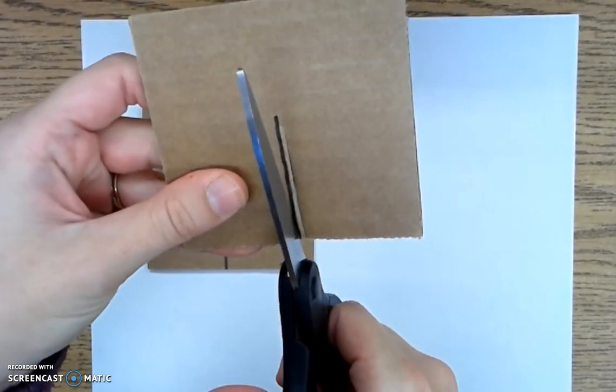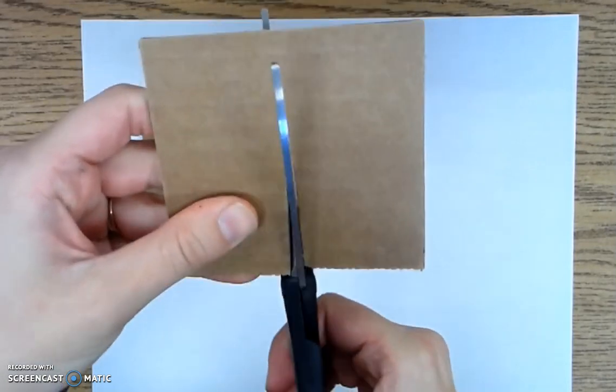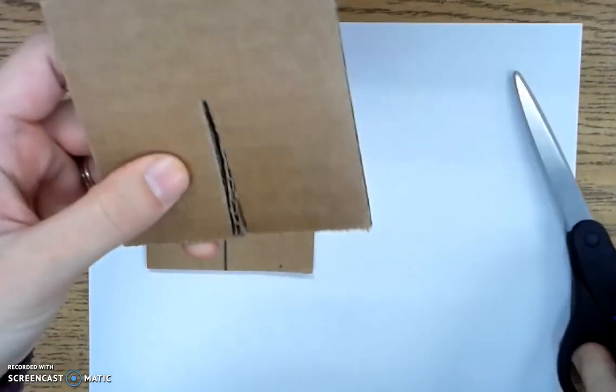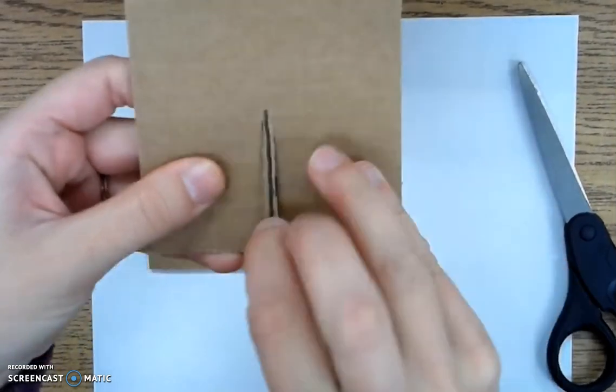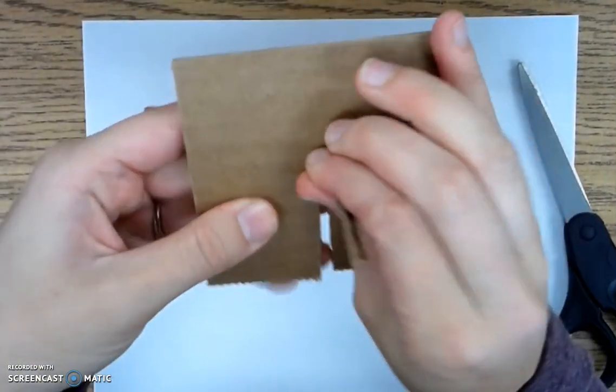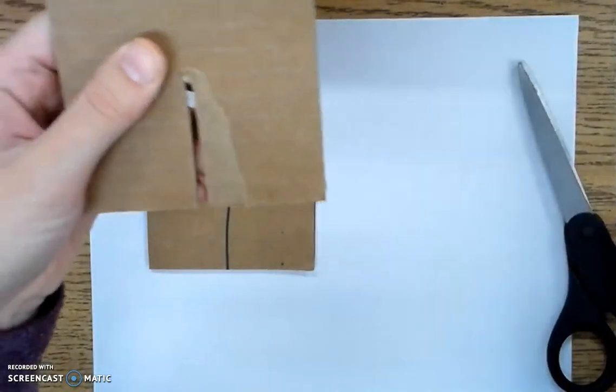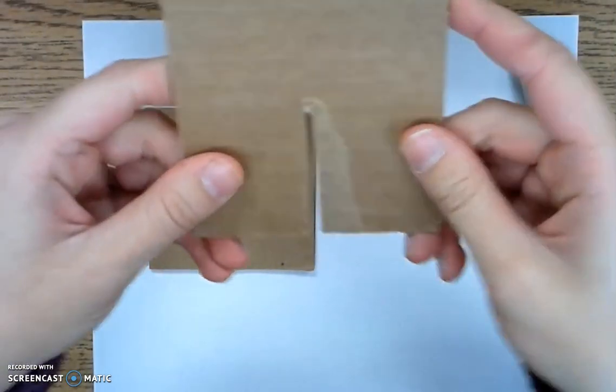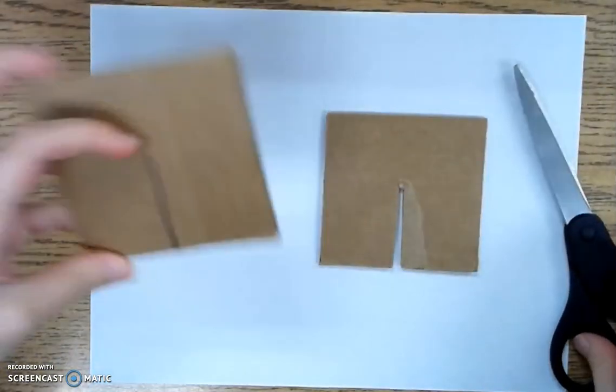And now I'm going to cut right beside the black line on the other side. So now I have this piece of cardboard sticking out. I'm just going to rip that off like that, and I have that groove cut in there.